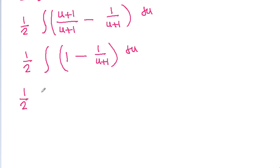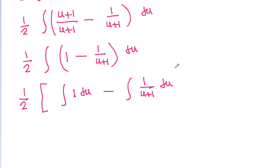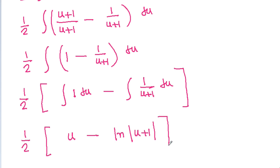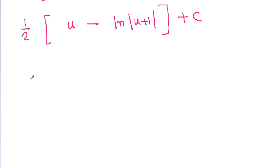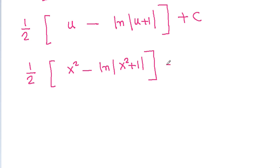So it is 1 by 2 times the integral of 1 minus 1 by u plus 1 du. The integral of 1 is u and the integral of 1 by u plus 1 is ln of u plus 1. Back-substituting u equal to x square, it is 1 by 2 times x square minus ln of x square plus 1, plus constant c. So this is the value of the integral.